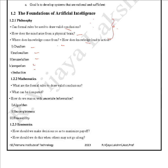Mathematics also plays a very crucial role in intelligent systems. What are the formal rules to draw valid conclusions? What kind of inference rules do we have to follow, and how to implement the inference rule? How to use propositional logic and combine it with NLP? What can be computed, and how do we reason with uncertain information? We use algorithms and try to overcome incompleteness and intractability.